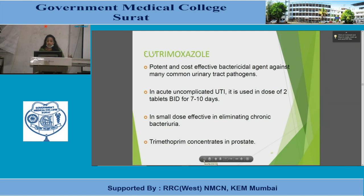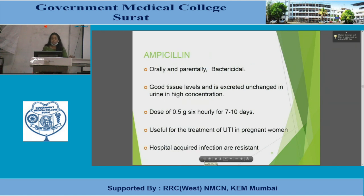In acute uncomplicated UTI, cotrimoxazole is used as two tablets twice a day for 7–10 days. In small doses it is effective in eliminating colonizing bacteria; trimethoprim concentrates in the prostate. Ampicillin is used orally and parenterally as a bactericidal agent, has good tissue levels, and is excreted unchanged in urine at high concentration. The dose is 500 mg six-hourly for 7–10 days, useful for UTI in pregnant women; hospital-acquired infections are resistant.